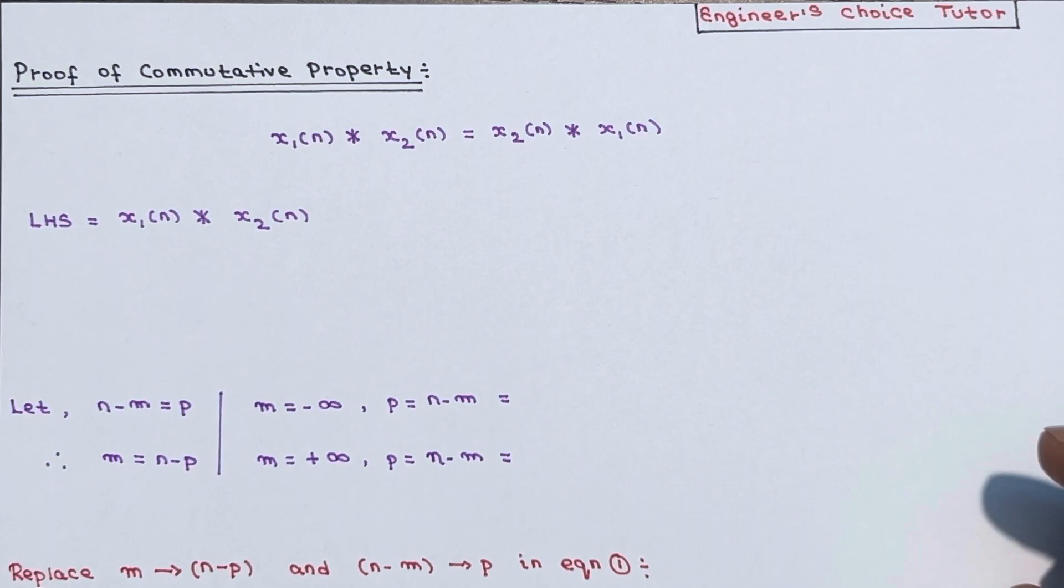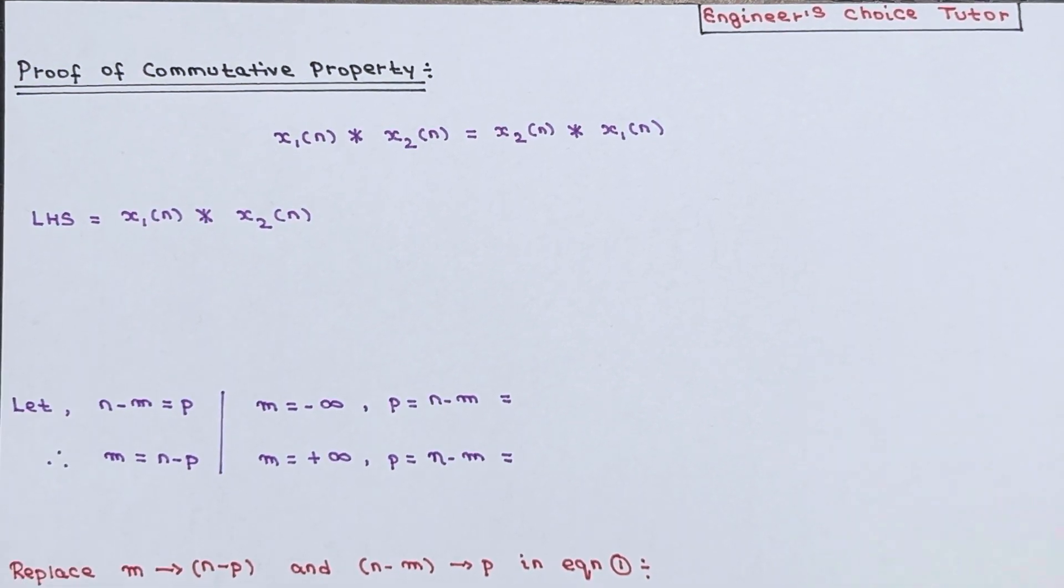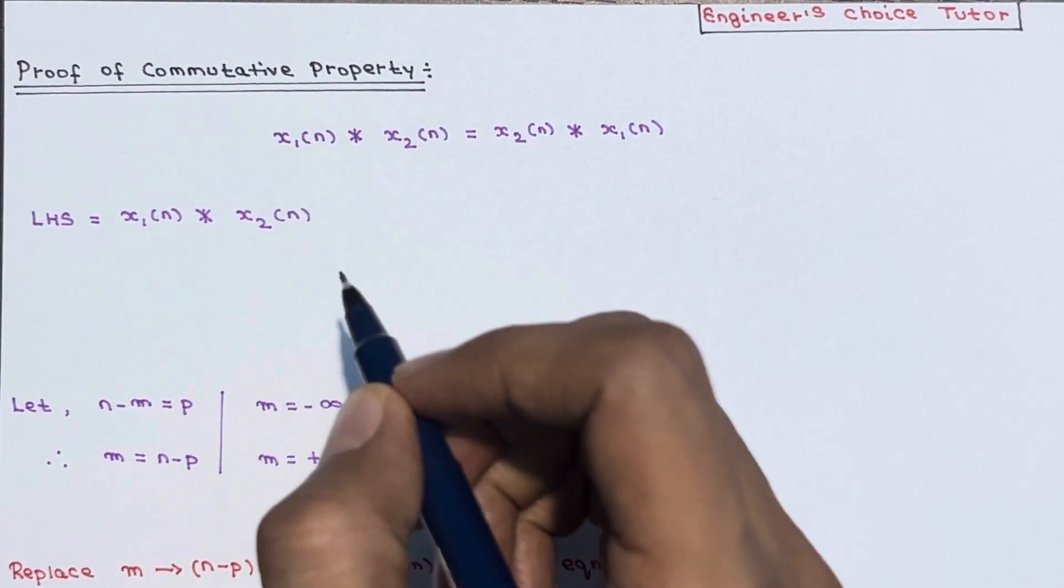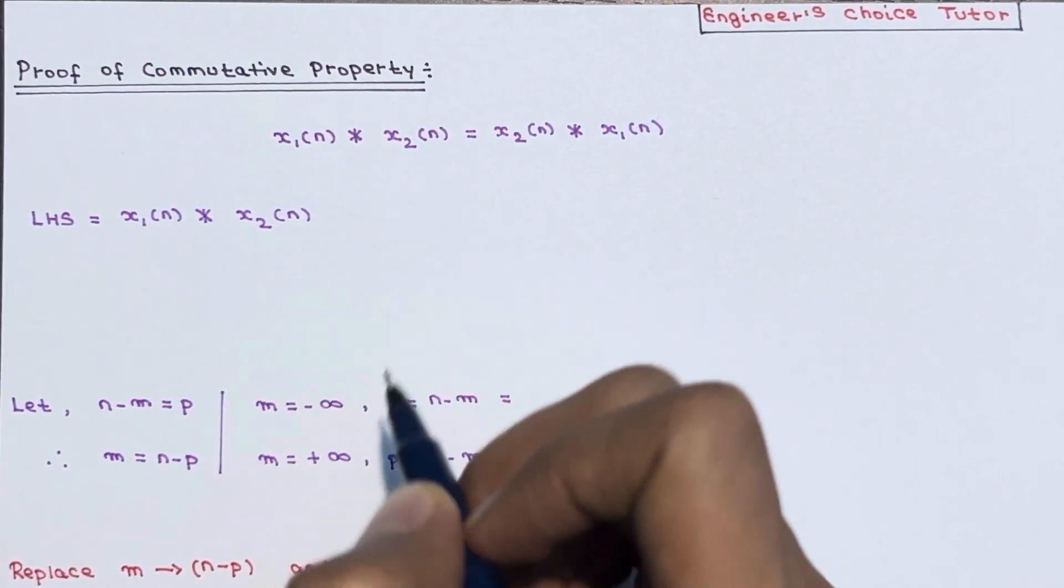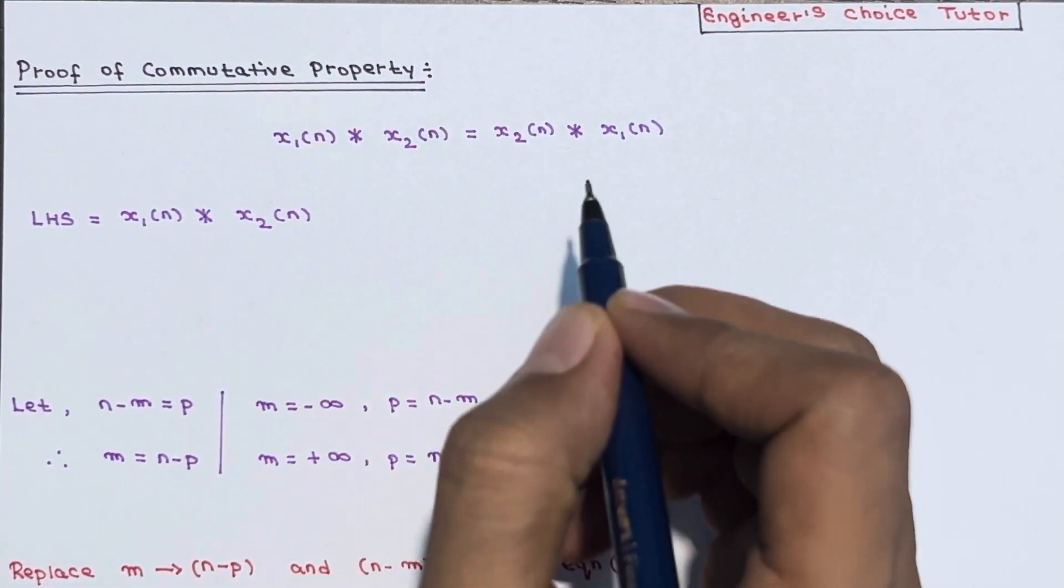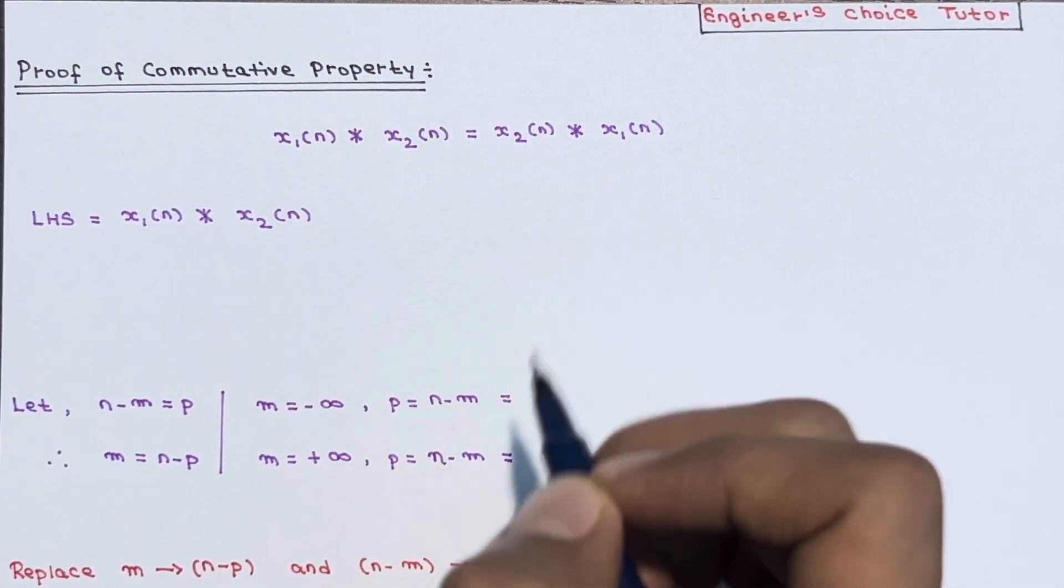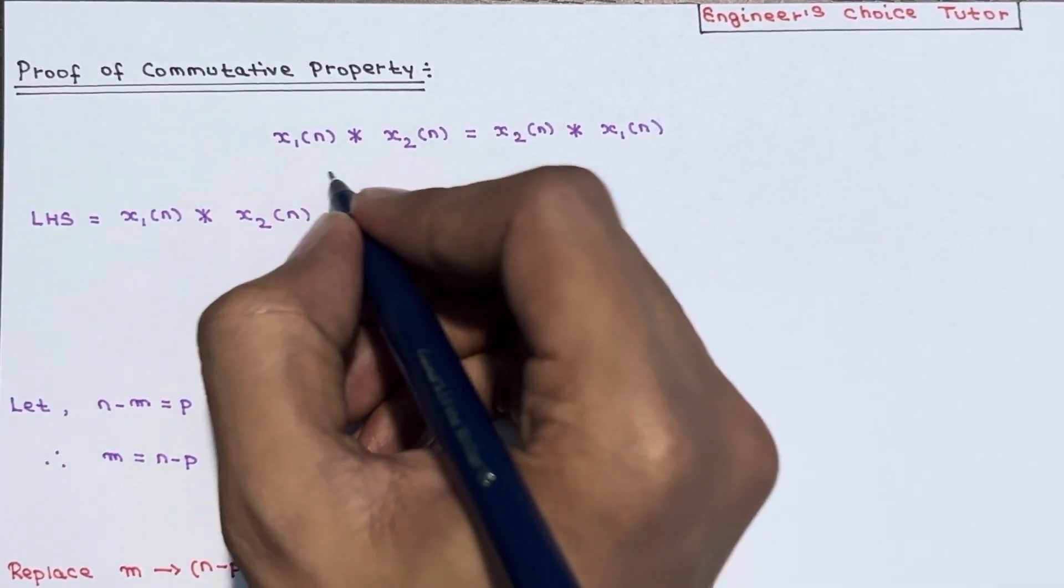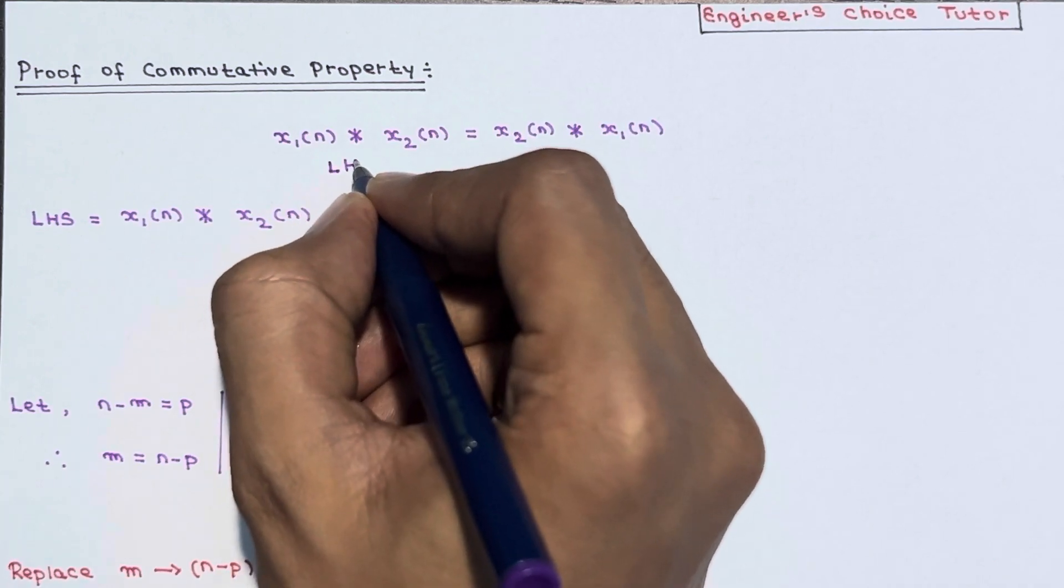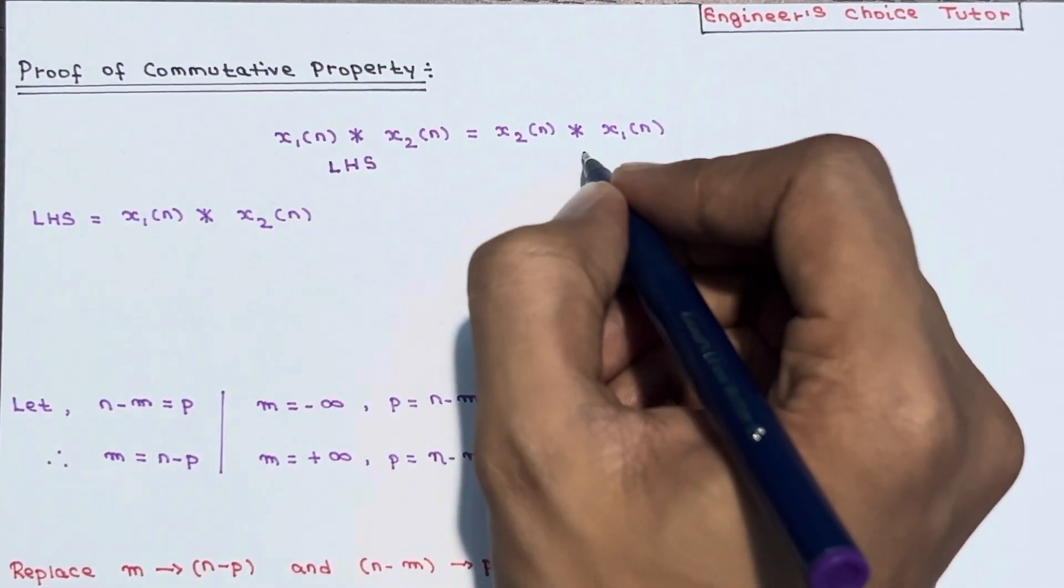So what we have to prove? We have to prove that convolution of x1(n) and x2(n) is equal to convolution of x2(n) and x1(n). So this is basically the LHS and this is basically the RHS.